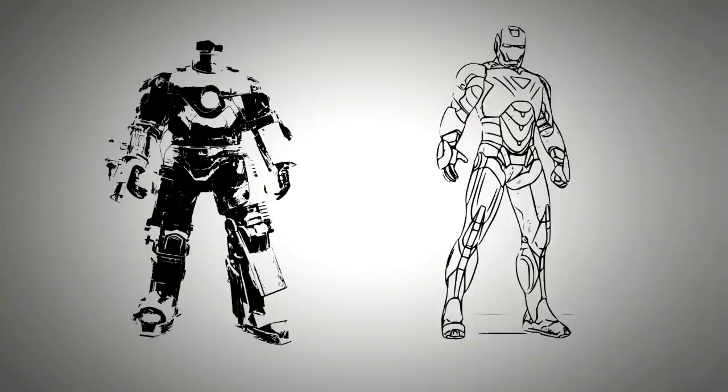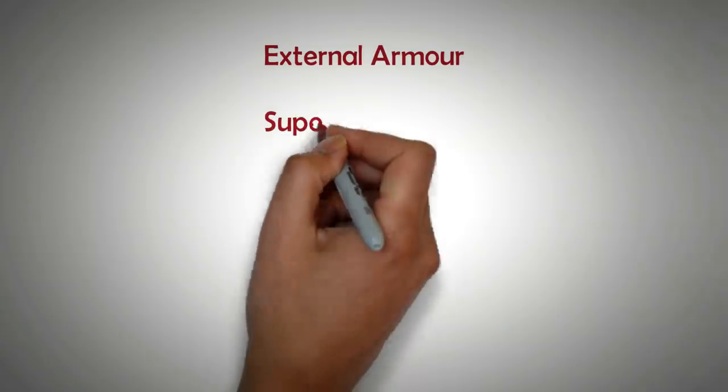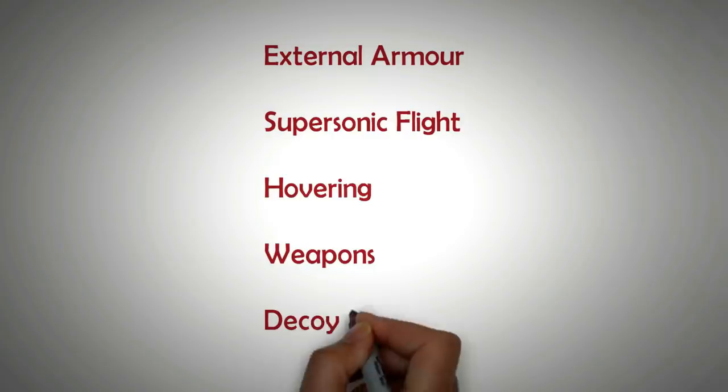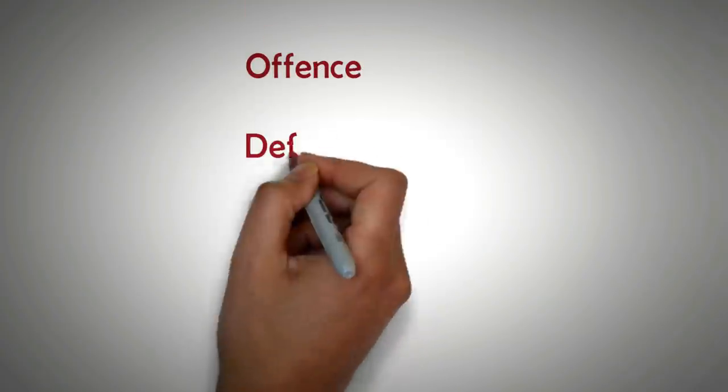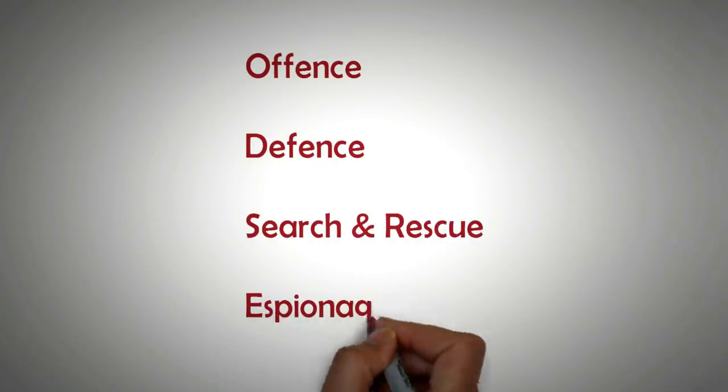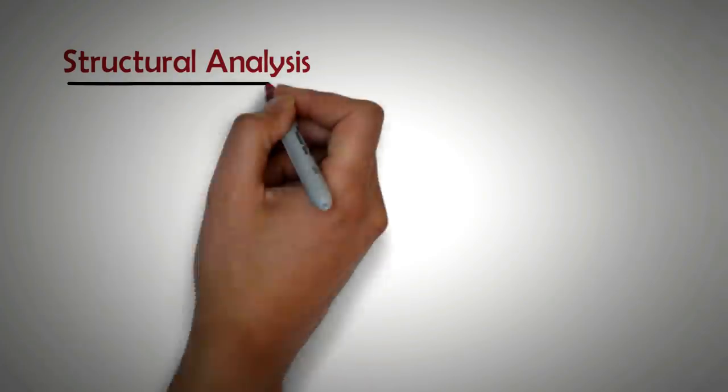All the suits have the following capability: external armor, supersonic flight capability, hovering capability, weaponry, decoy flares. The suit can be used for multiple roles - that is, it can be used for military offense, defense, search and rescue, and espionage. So let's dive into the structural or strength aspect of the suit.